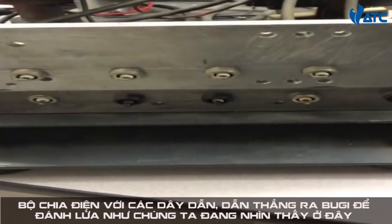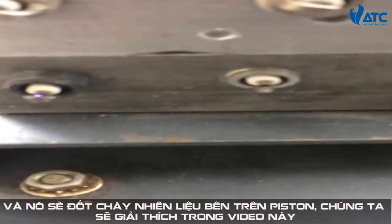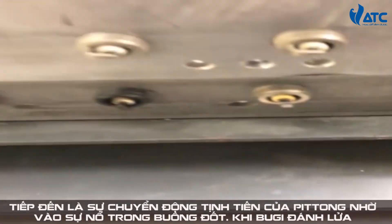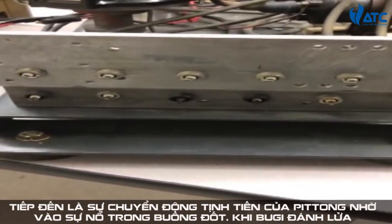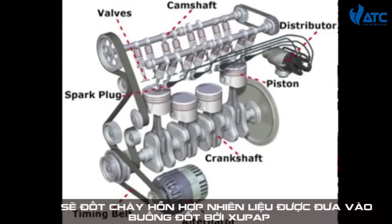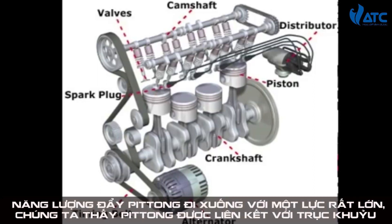This is the distributor with the wires coming out of it going straight to the spark plugs. The spark plugs ignite the fuel above the piston. Next is the piston — the piston goes up and down because above it there's an explosion. When the spark from the spark plug ignites the gas put in by the valves, it combusts and pushes the piston down with a lot of force.